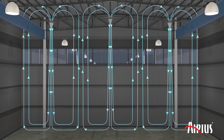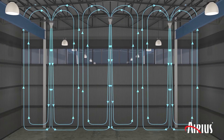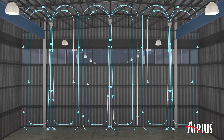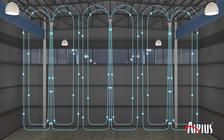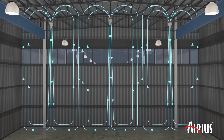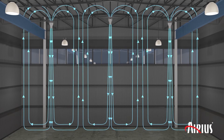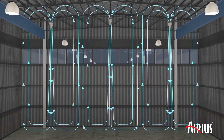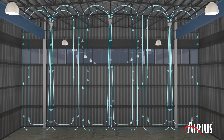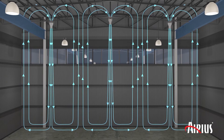Areas fans reduce stratification with an array of fans mounted at the deck. The fans vertically mix the interior volume of the space to reduce stratification by moving warm air from the deck to the floor below.